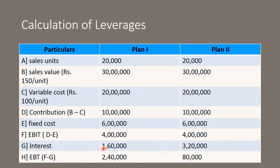When we deduct the interest value from EBIT, what we get is EBT — earnings before tax. So for Plan 1: 4 lakhs minus 1 lakh 60,000 = 2 lakh 40,000. We need EBT for calculation of financial leverage. For Plan 2: EBIT minus interest 3 lakh 20,000 gives us 80,000. So EBT is 2 lakh 40,000 for Plan 1 and 80,000 for Plan 2.